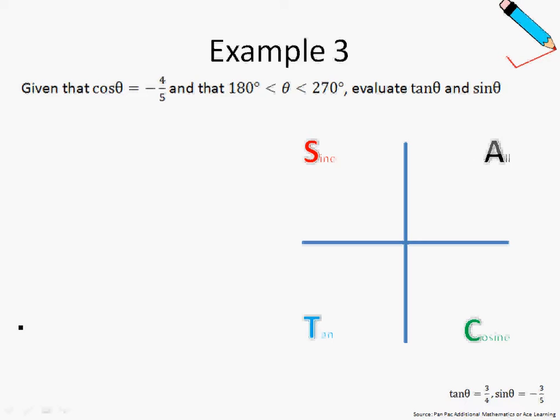Just take note that since cosine θ is negative, we can either be in the sine or the tangent quadrant since cosine θ is negative.